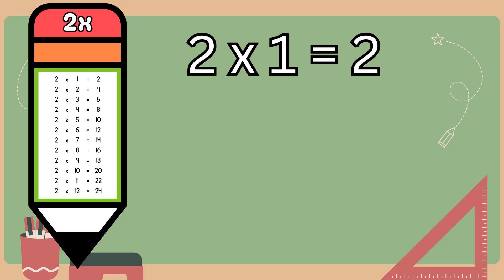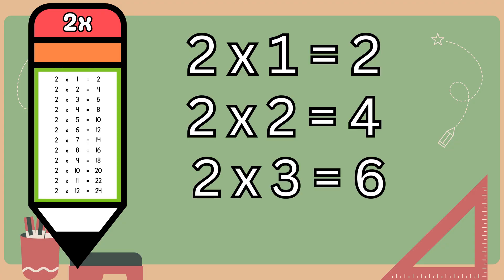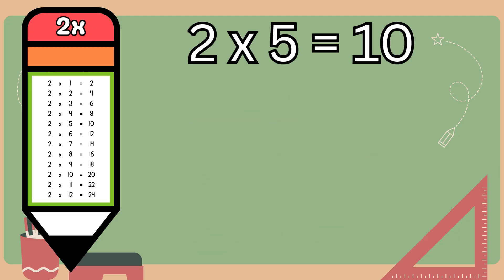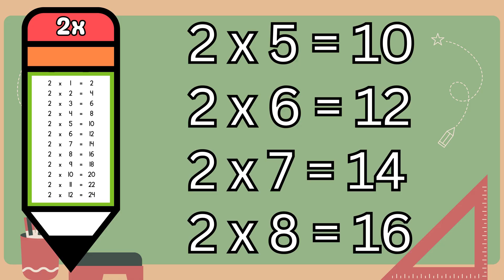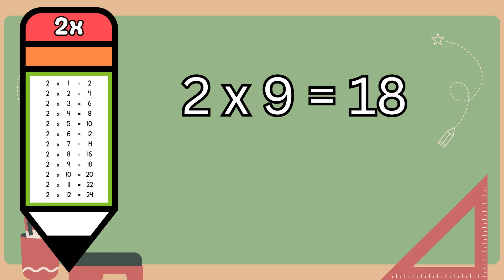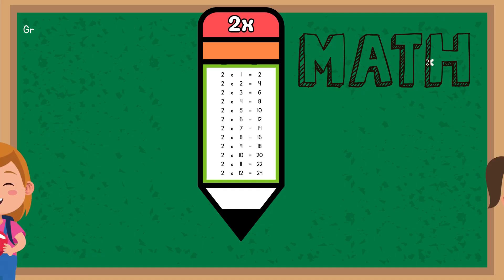Two ones are two, two twos are four, two threes are six, two fours are eight, two fives are ten, two sixes are twelve, two sevens are fourteen, two eights are sixteen, two nines are eighteen, two tens are twenty.